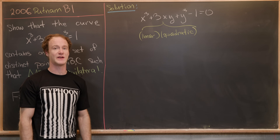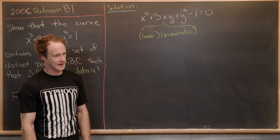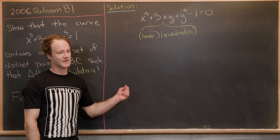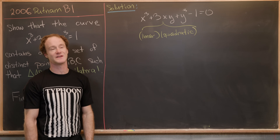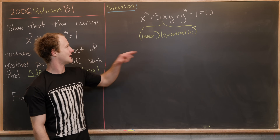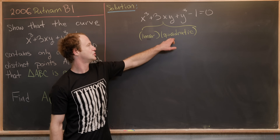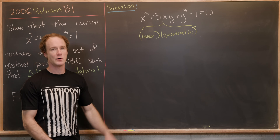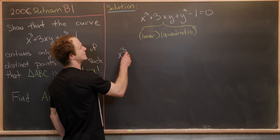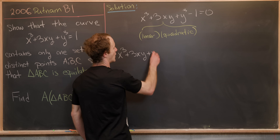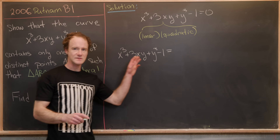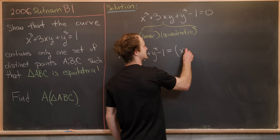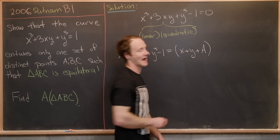Another thing to keep in mind is that this polynomial is symmetric in x and y — if I switch x with y I get the same polynomial. That tells me it probably factors into two polynomials that are also symmetric in x and y. So we'll take x³ + 3xy + y³ − 1 and write the linear polynomial as x + y + A.